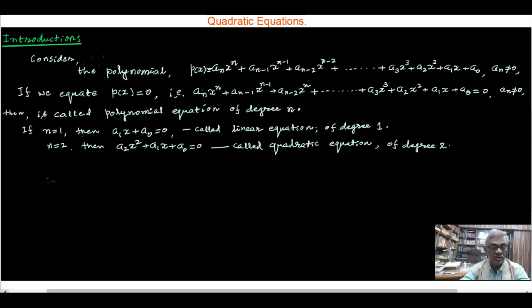And if n = 3, then a_3 x^3 + a_2 x^2 + a_1 x + a_0 = 0 called a cubic equation, that is of degree 3.